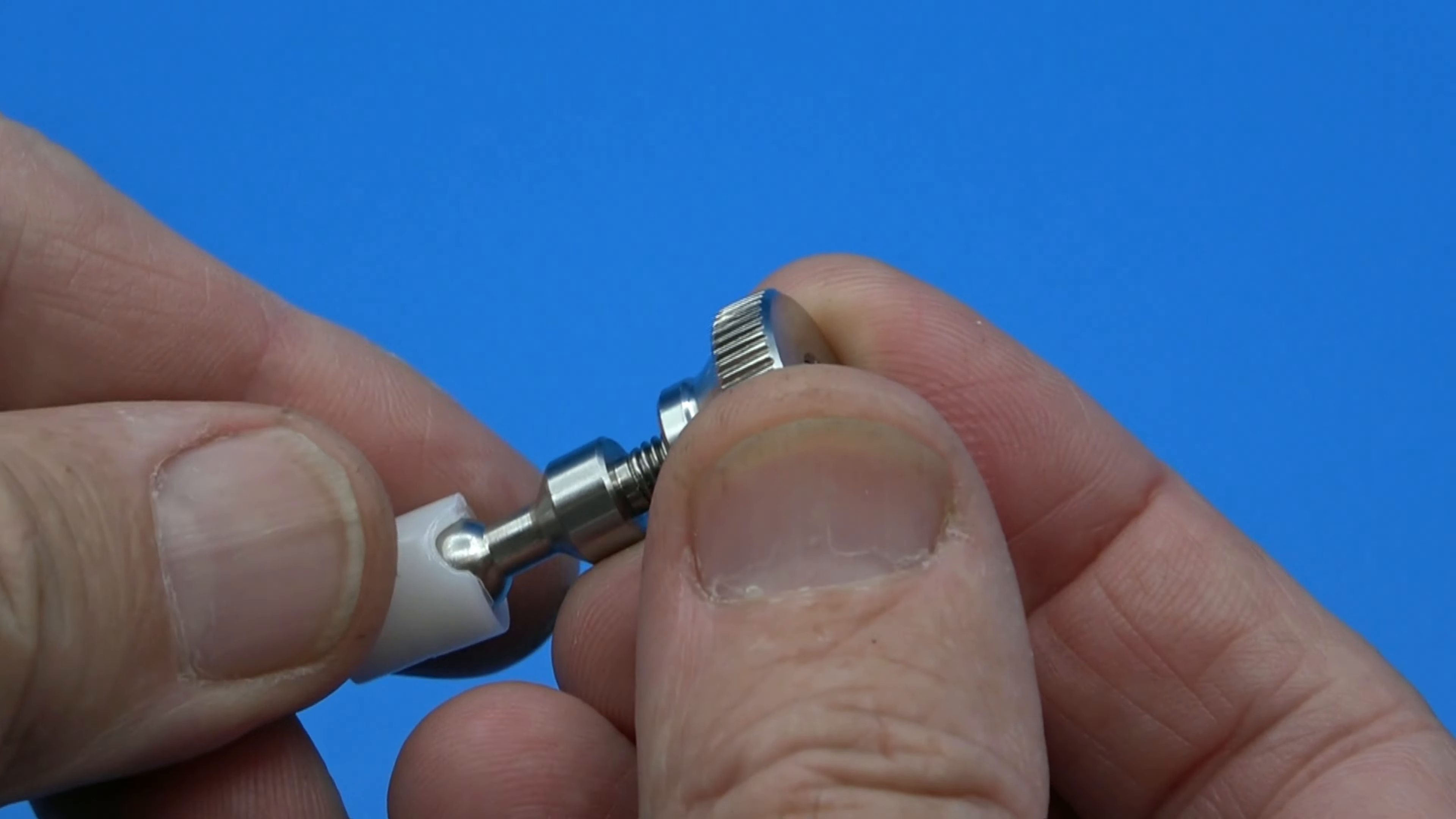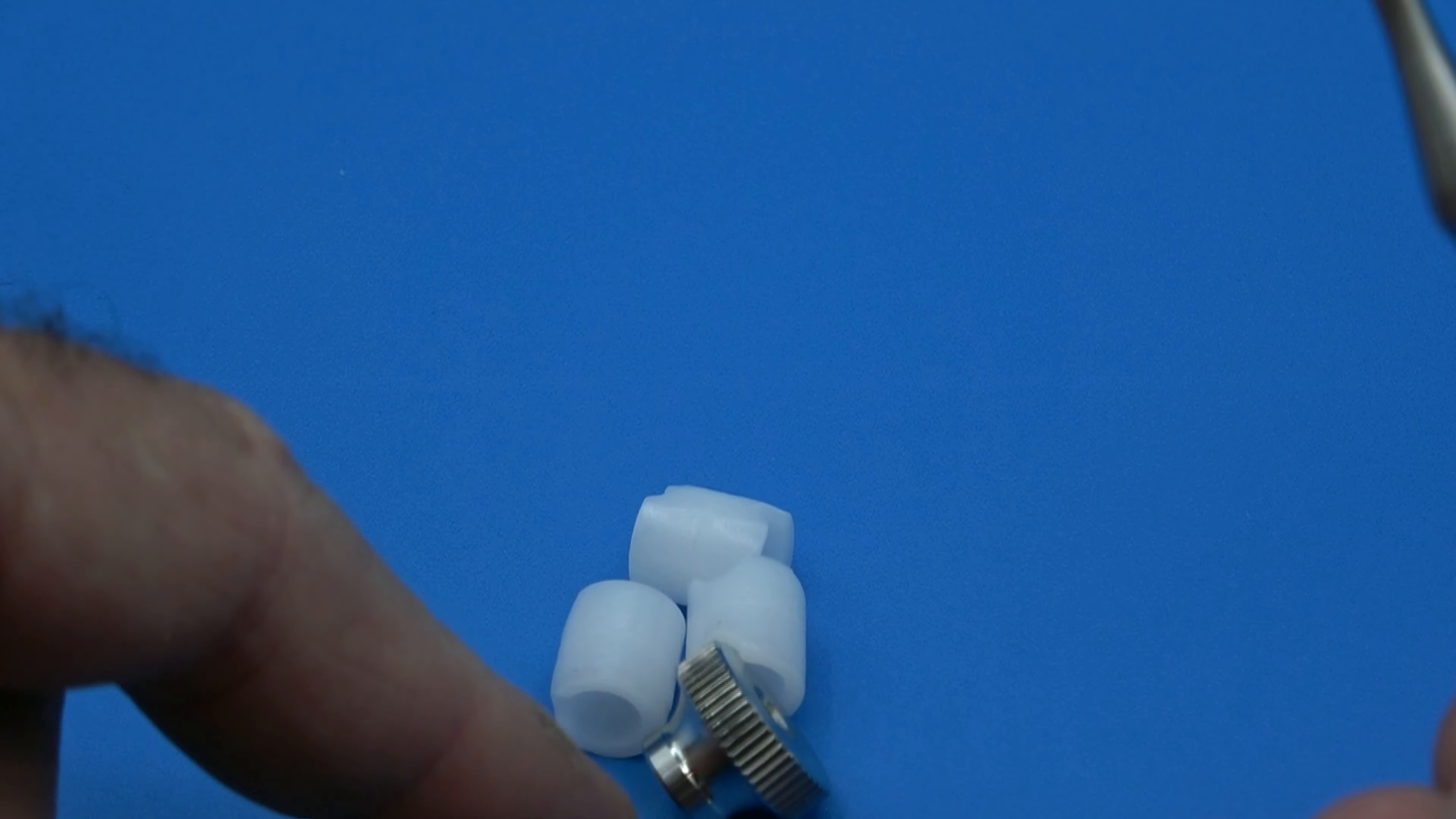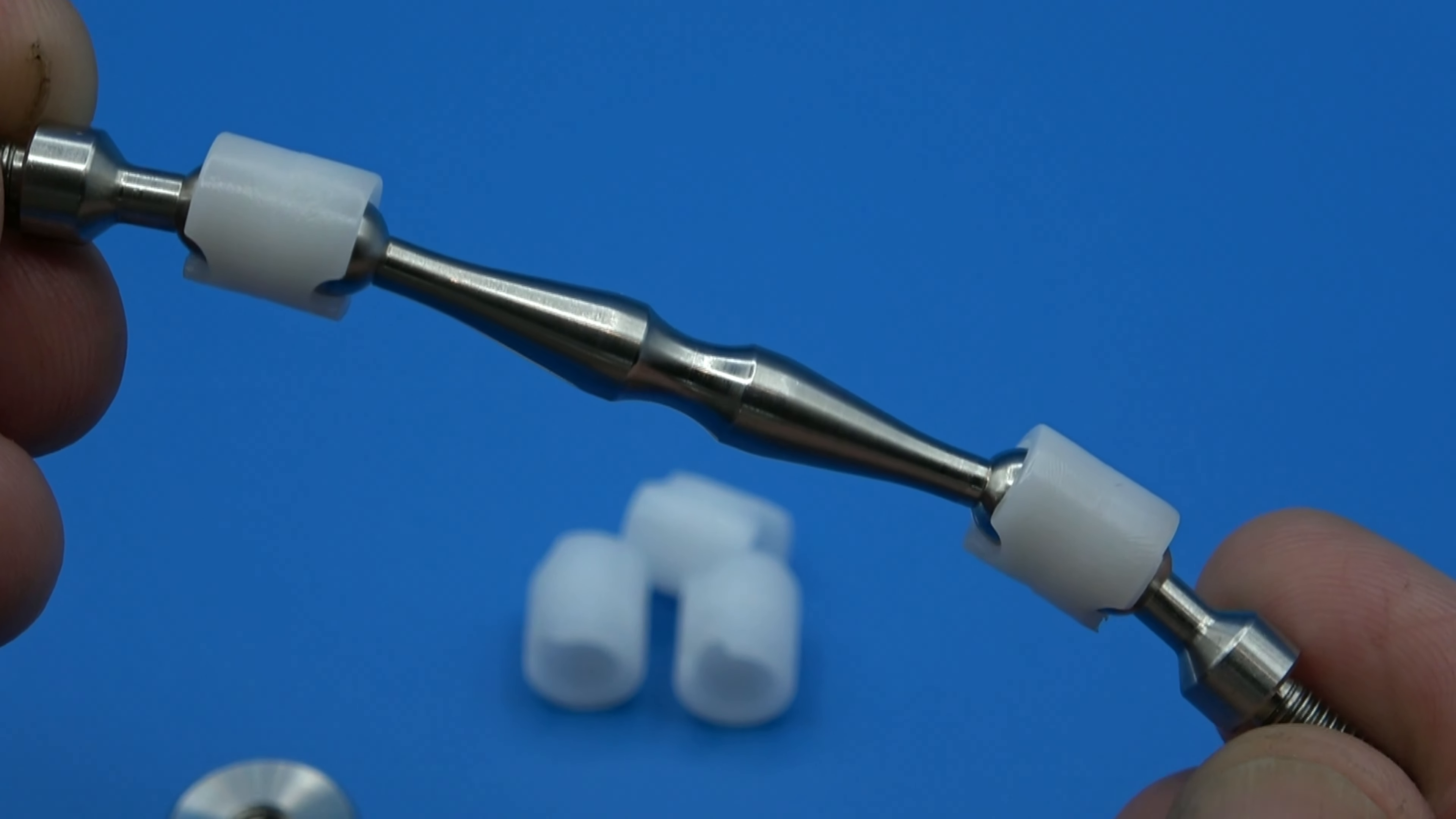And then the same ball screw on this end and thumb knot. We also provide three extra Teflon connectors and they're super tough, but if one of them breaks you've got spares.